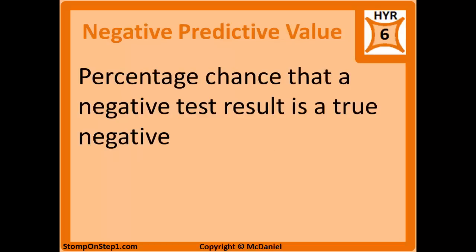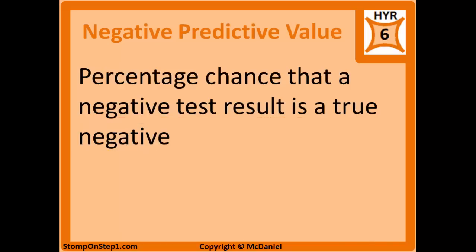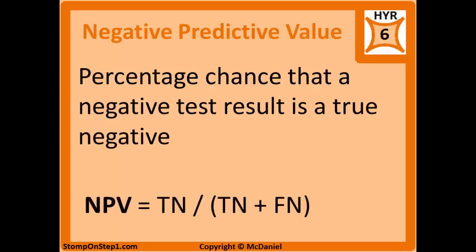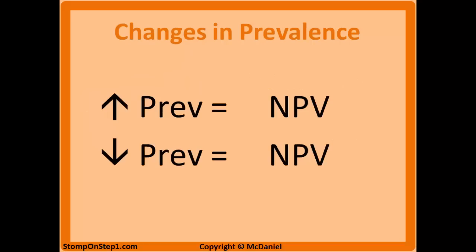Negative predictive value is just the opposite. It's the percentage chance that a negative test result is a true negative, or the percentage chance that a patient with a negative result actually is disease free. The formula is true negative divided by true negative plus false negative. You interpret negative predictive value the same way — you use it to figure out what a negative test result means to the patient. Negative predictive value is inversely proportional to prevalence, so when prevalence goes up, negative predictive value goes down.